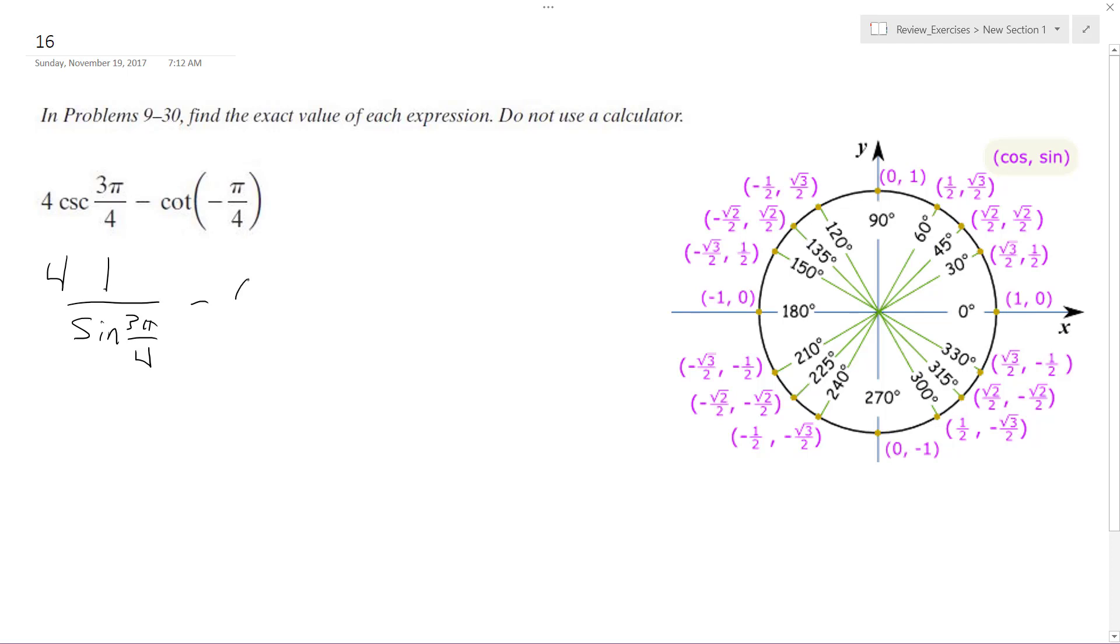And then minus cotangent. So cotangent of negative pi over 4, 315 degrees. I'll just leave it.